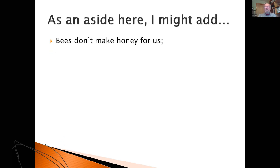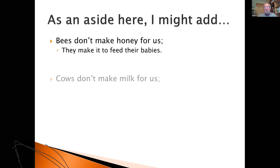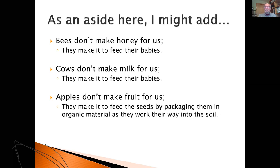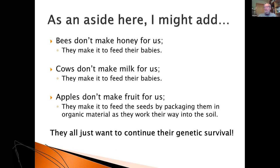As an aside: bees don't make honey for us, any more than cows make milk for us. They make honey to feed their babies and to continue their species. Cows make milk to feed their calves. Apples make fruit around the seeds to package them in organic material, so as they work their way into the soil, they're already enriched and starting to grow. The apples we eat are actually the food made for the seeds, and the honey we produce was made to feed their babies and get through the winter months. They all just want to continue their genetic survival.